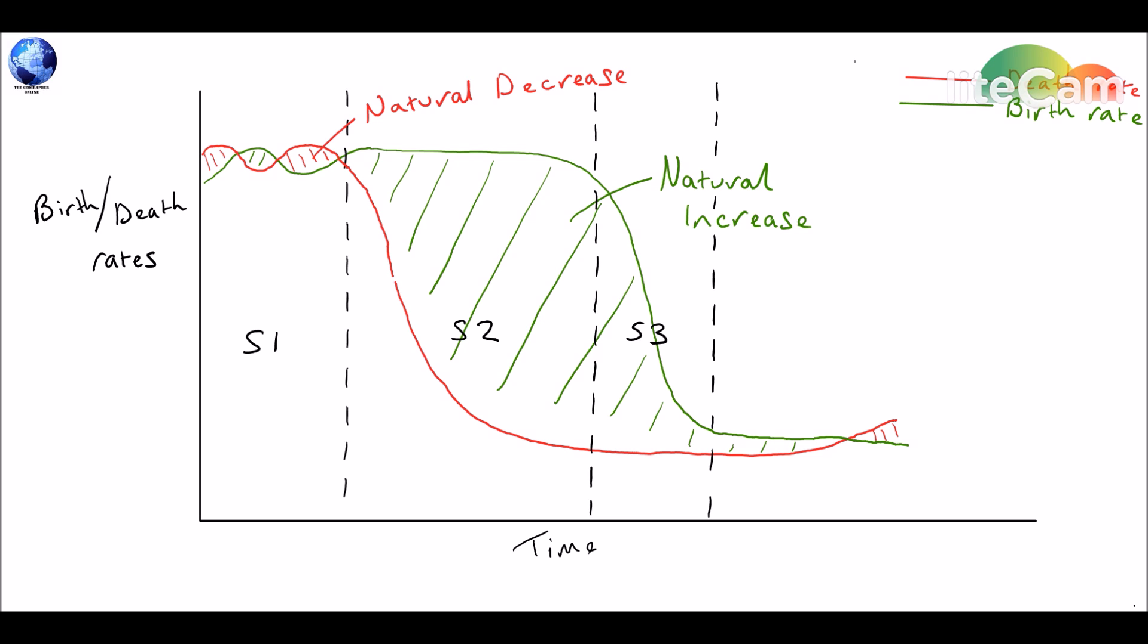Stage four, on the other hand, occurs when both of these lines, the birth rate and the death rate, kind of even out. They stay around about the same. Typically speaking, birth rate is still a little bit above death rate. So we still have a tiny amount of natural increase.